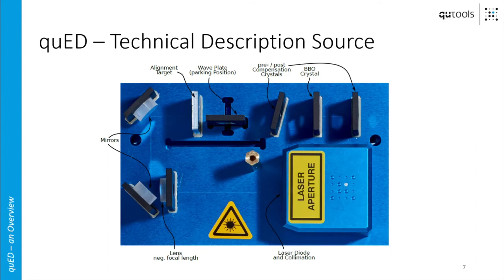Here you can see a view under the white hood of the optical part. Under this white hood is the optical setup where here is the laser. We have one lens at the end of the casing, then another lens for beam shaping. We have two mirrors with which we can align the laser to hit the BBO crystal at exactly the right spot and under the right angle. There's an alignment target with a very small pinhole in the middle and markings on the front side for a simple alignment procedure, and the pre and post compensation crystals are also glued in there.